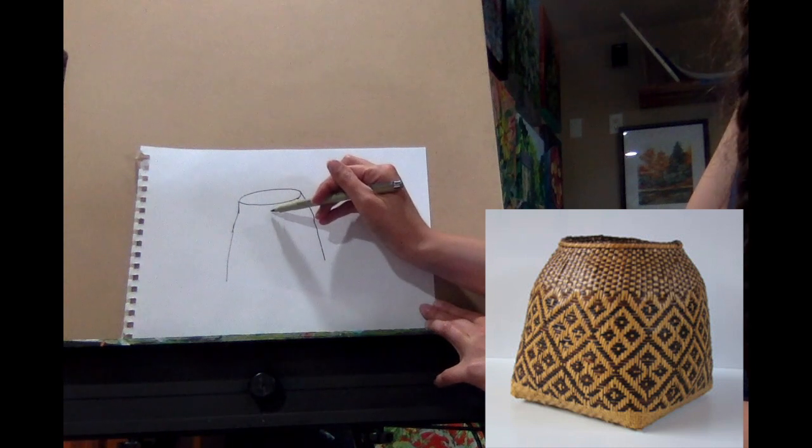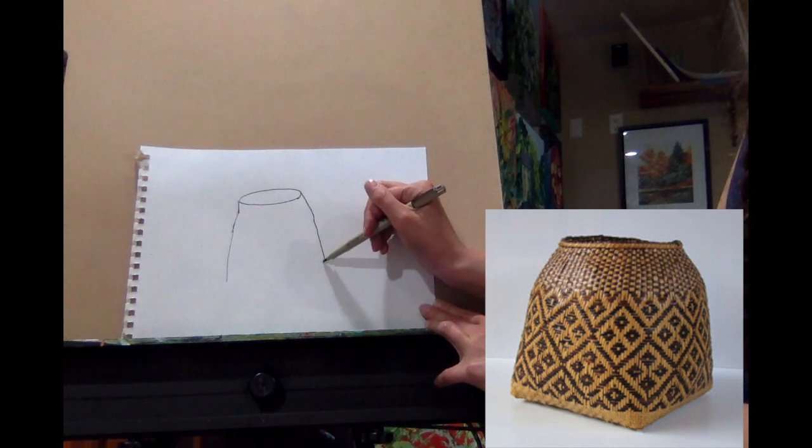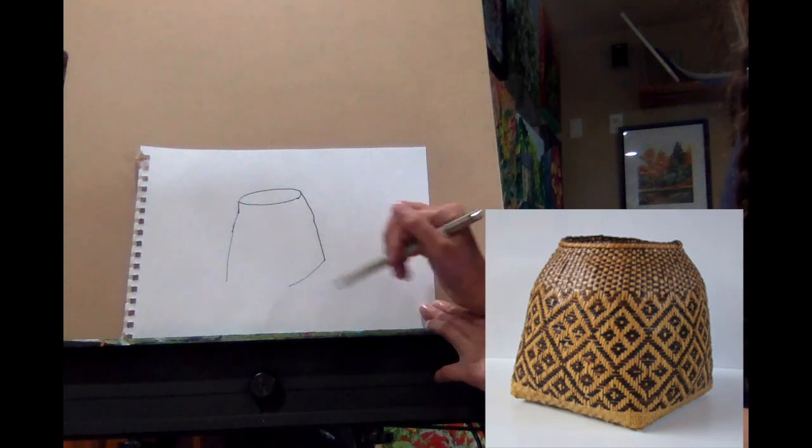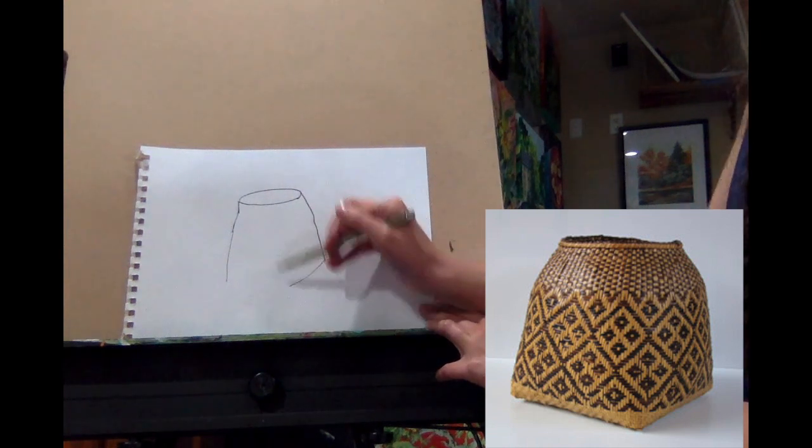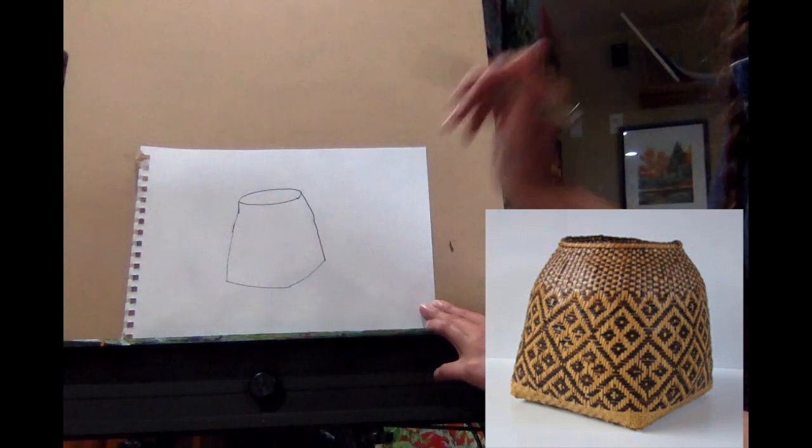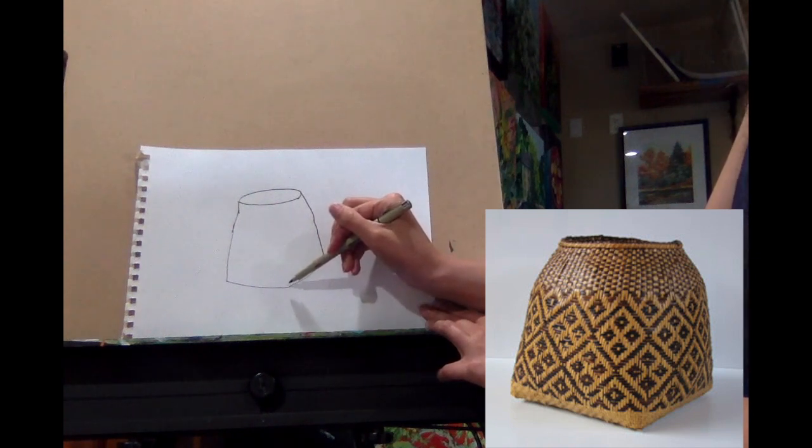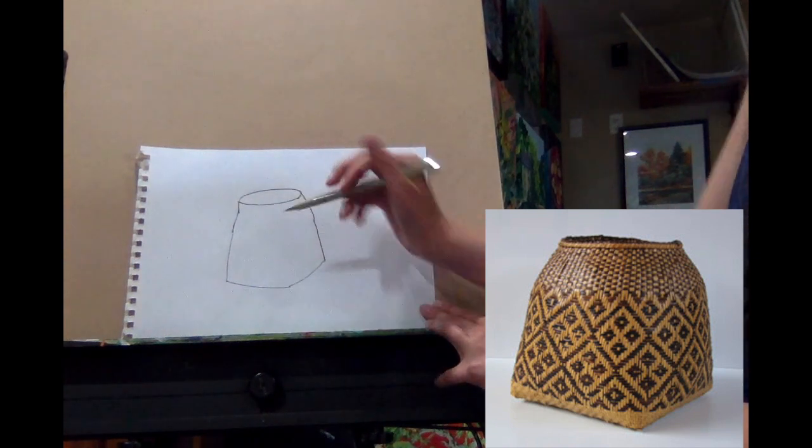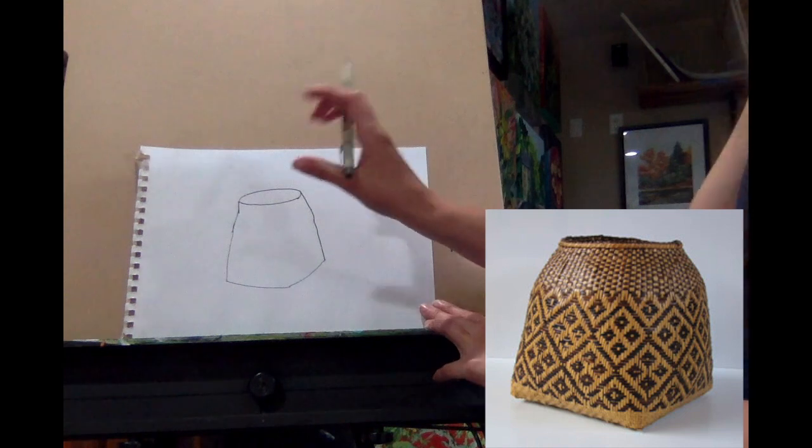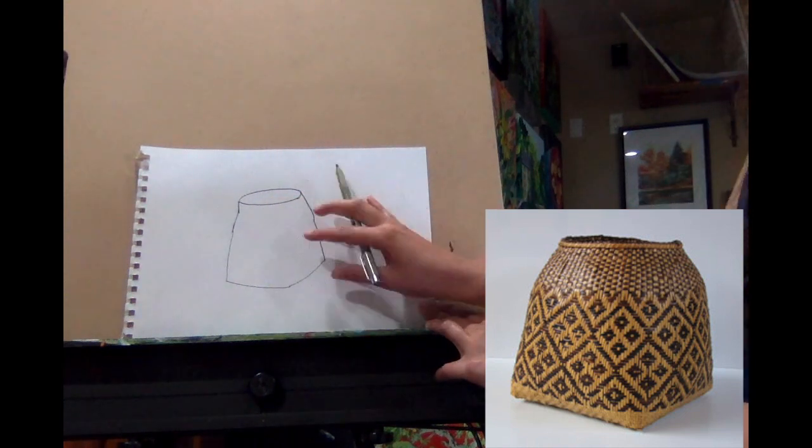So what we're going to do is we're going to add a line that goes here to here, stop right about the middle, and then from here to here. So now this is actually the corner of the basket. Now we wouldn't put a line, though, because it's not perfectly square. It's round, and then it goes into a square bottom.